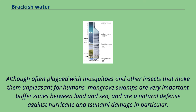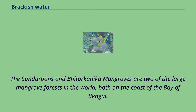Although often plagued with mosquitoes and other insects that make them unpleasant for humans, mangrove swamps are very important buffer zones between land and sea, and are a natural defense against hurricane and tsunami damage in particular. The Sundarbans and Bhitarkanika mangroves are two of the largest mangrove forests in the world, both on the coast of the Bay of Bengal.